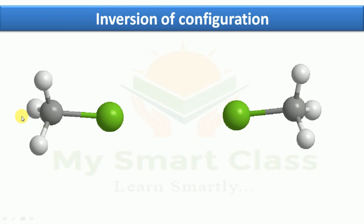In the starting material, the nucleophile attacks from the left side. When it attacks from the left side, the three hydrogens on the left side of the carbon invert and move to the right side. This is just like the inversion of an umbrella, and it is called inversion of configuration.